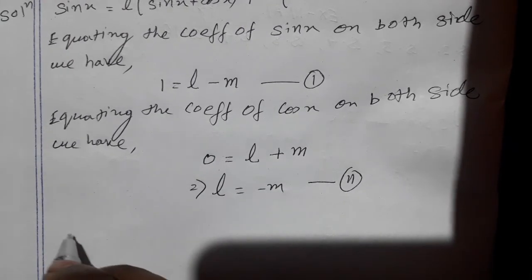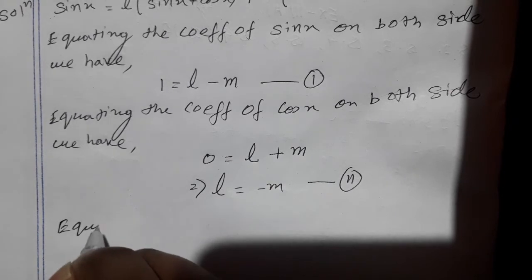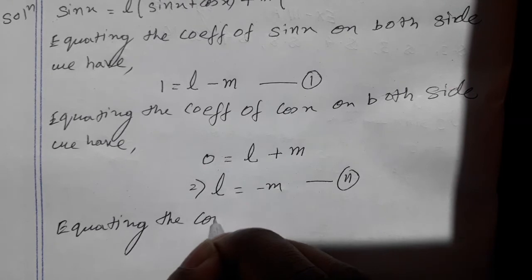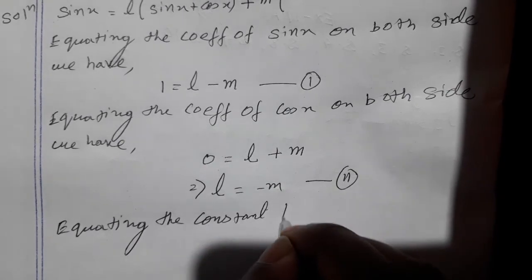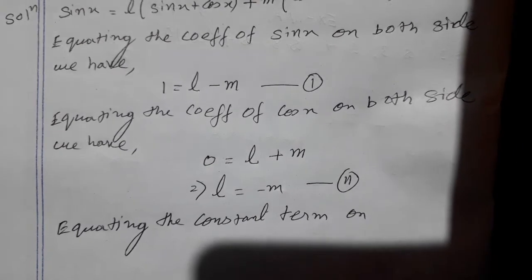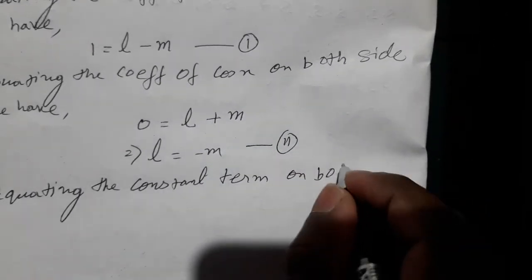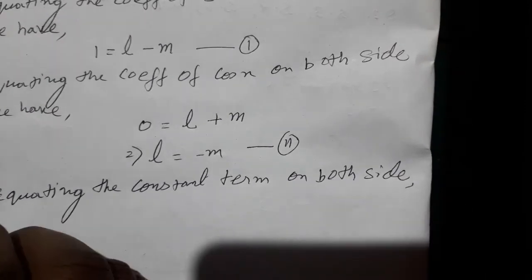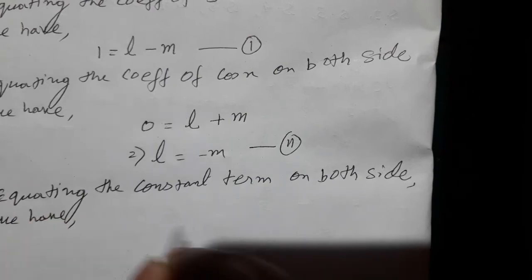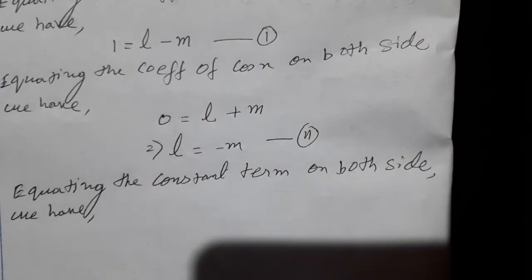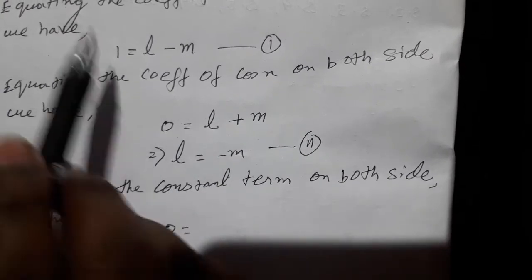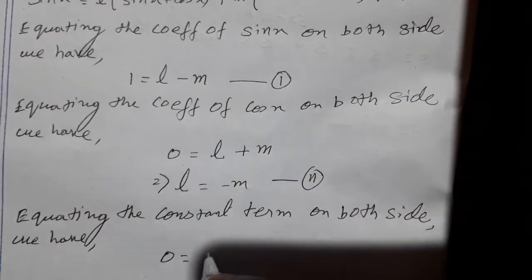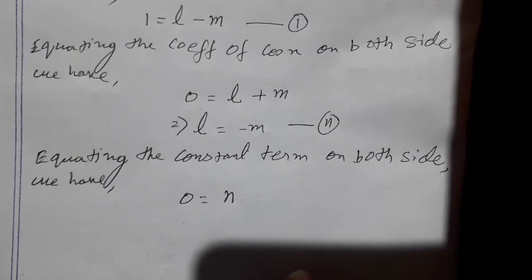Now we equate the constant term on both sides. There is no constant term on the left side, so it will be 0. The constant term on the right side is N. So 0 equals N, meaning N is equal to 0.